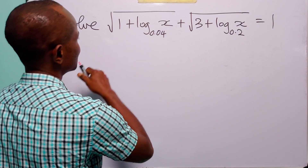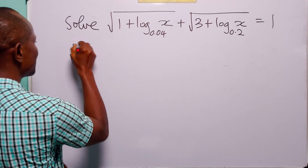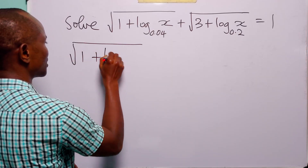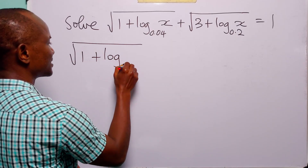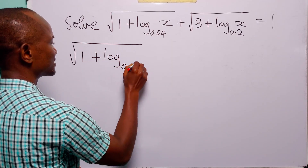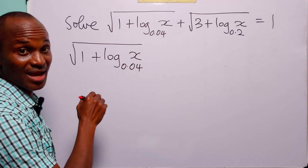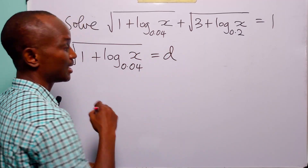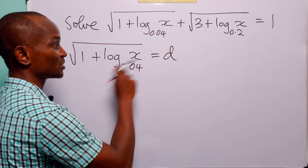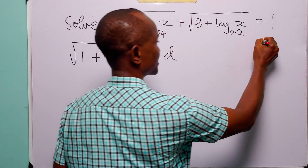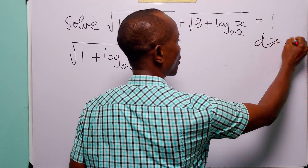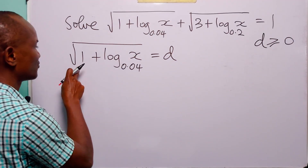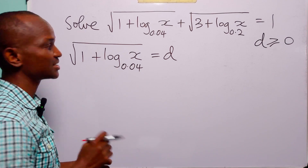Let this first term — that is the square root of 1 plus log base 0.04 of x — be equal to d. This comes with the condition that d must be greater than or equal to 0, because the square root must always be positive.